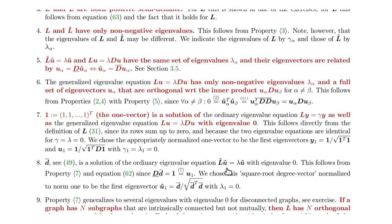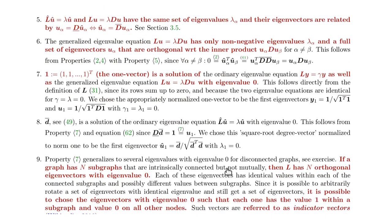Furthermore we have seen that the one vector is a solution of the ordinary eigenvalue problem as well as the generalized eigenvalue problem with an eigenvalue of zero. And the reason is that the rows of L, the elements within a row of L add up to zero.